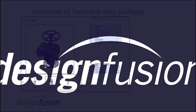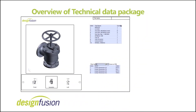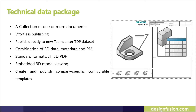Hello, welcome to Design Fusion. My name is Nirav Mistry and today we will see an overview of the Technical Data Package in NX 1953. The NX license for Technical Data Package comes as an add-on module and the product number is NX 30186. This data package is available from NX 1847, which was released in January 2019.